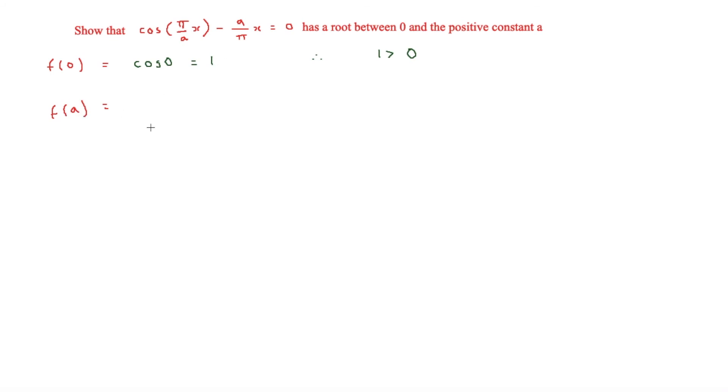Then f of a. This one is asking us to put a in. We've got cos, and then pi over a times a. That's going to be cos pi, because the a's cancel. Then we have minus a over pi times a, which is minus a squared over pi. Now cos of pi equals minus 1, so that's minus 1 minus a squared over pi.